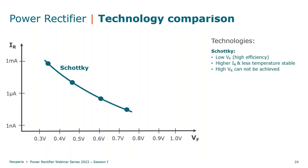First of all, Schottky rectifiers are well known for their efficiency — they have a very low VF, but this always comes at the expense of accepting higher reverse leakage currents. By using a different Schottky barrier metal, different points on that curve can be achieved.